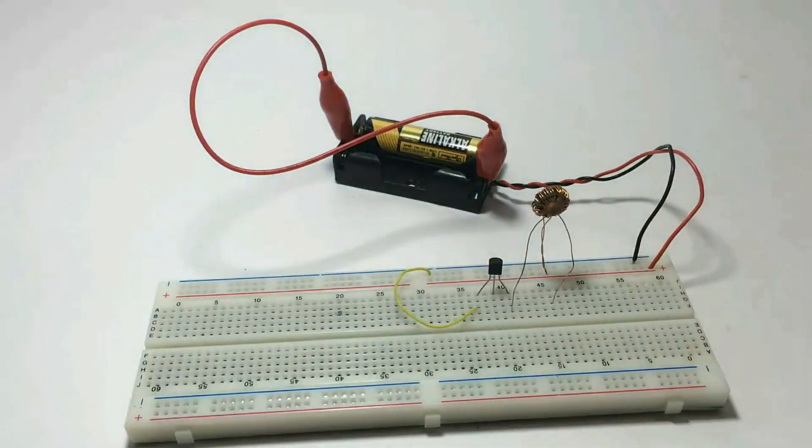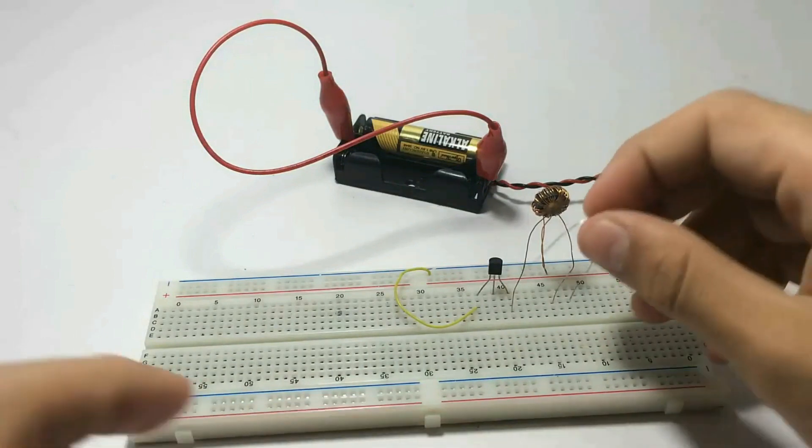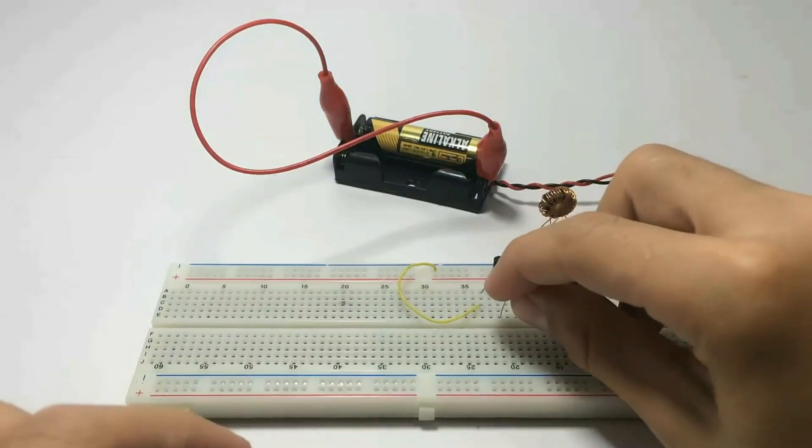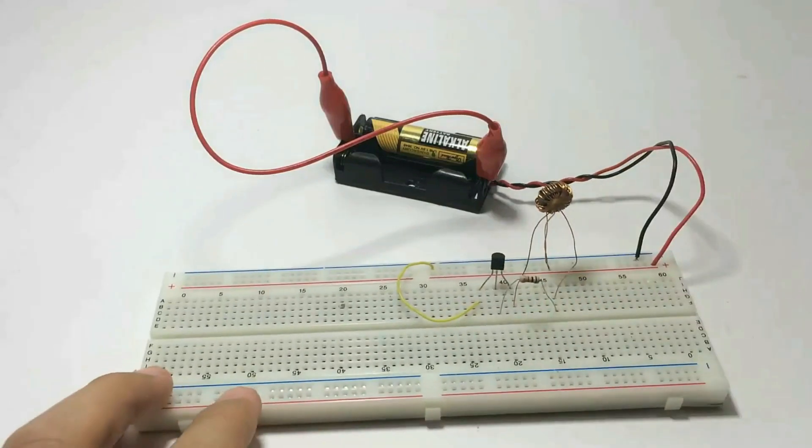Now it's time to place the resistor, simply from the base to the right side of the ferrite coil.